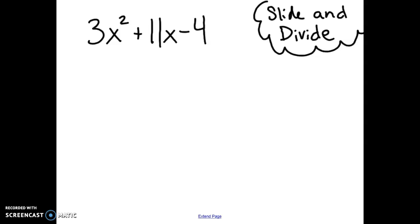So to use the slide and divide method, we're going to look at the a, b, and c value. Don't forget, ax squared plus bx plus c is our standard form for a trinomial.